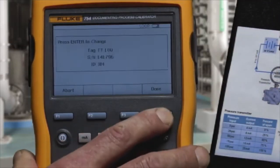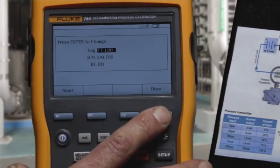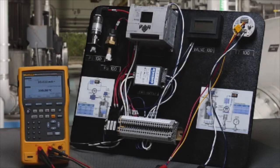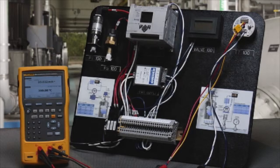It's done. Tag serial number and ID of who did the work. We're done because it passed the test, and we have completed documenting the performance of this RTD transmitter using the 754 documenting process calibrator.